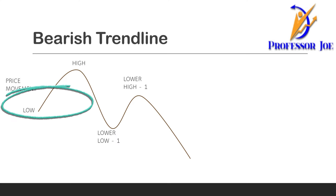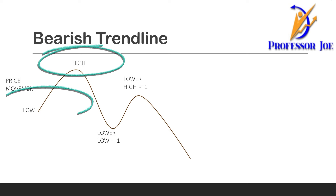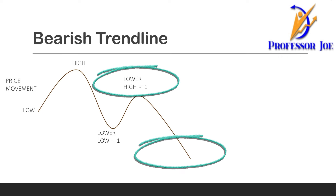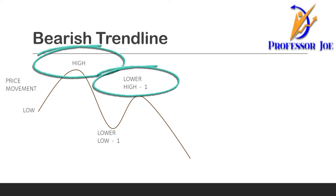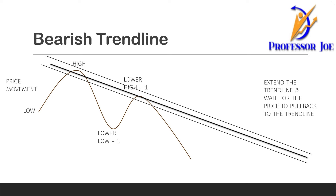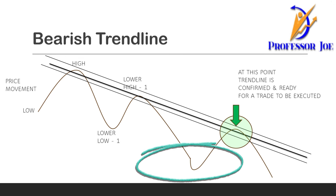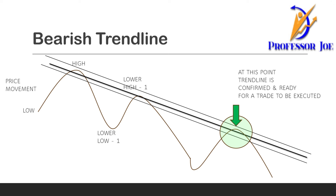Now let's look at an example in a bearish market of how to draw a trend line. The price movement goes from a low to a high, then comes to a lower low, goes to a lower high, then comes back to a lower low. You now have two points: point one is your high, point two is your lower high. Draw a line touching the high and the lower high and extend it — extending the line is very important because that is where you look for your trade opportunity. When the price moves up from the second lower low and touches the trend line, that highlighted area is where the trader wants to go for a sell call.